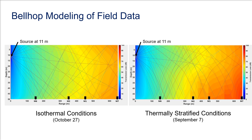To estimate the transmitter-to-receiver distance at which the effect of a thermocline on detection efficiency becomes apparent, we used the Bellhop modeling program to predict sound signal travel and transmission loss in our observed isothermal and stratified conditions. Field data from October 27th were used as a sample of isothermal condition, and data from September 7th were used as a sample of thermally stratified condition. The results show that during isothermal conditions, transmission loss increases uniformly with distance. Under thermally stratified conditions, sound signals are refracted near the thermocline and transmission loss below the thermocline occurs more quickly than above, but this difference is not observable until the signal has reached approximately 200 meters from the source.